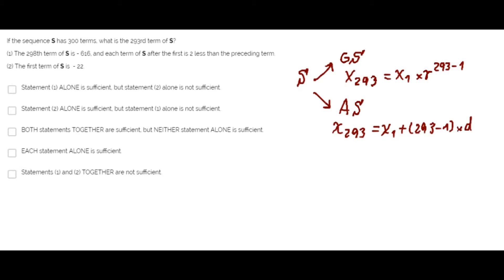From statement 1 alone, the 298th term of S is negative 616. Each term of S after the first is 2 less than the preceding term.